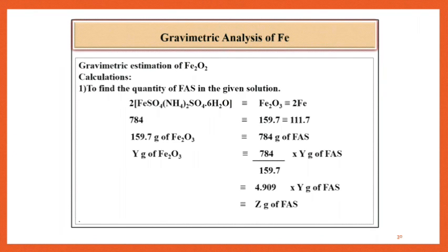FAS corresponds to Fe2O3 corresponds to 2 Fe. Therefore, 784 corresponds to 159.7 corresponds to 111.7. Therefore, 159.7 gram of Fe2O3 corresponds to 784 gram of FAS.